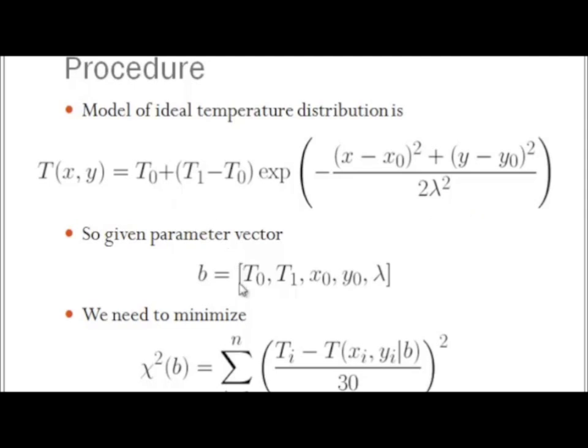So we want to find the parameters t0, t1, x0, y0, and lambda, lambda being the standard deviation of this Gaussian, that best fit this model to the data. In previous lessons in our computational statistics course, we determined that the way to find a best fit is to minimize the chi-square statistic. The chi-square statistic is a function of the parameter vector. It takes the temperature observed minus the temperature predicted by the model at our data points xi and yi, given the parameters b, and we divide by a standard deviation of 30. We are given that the standard deviation of the error in measurement is 30. And we wish to minimize this chi-square statistic in order to find the best fit.